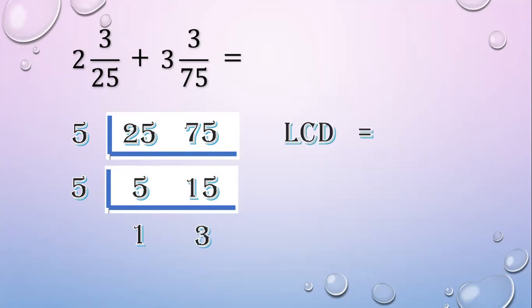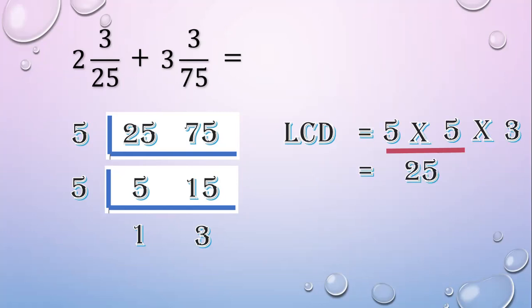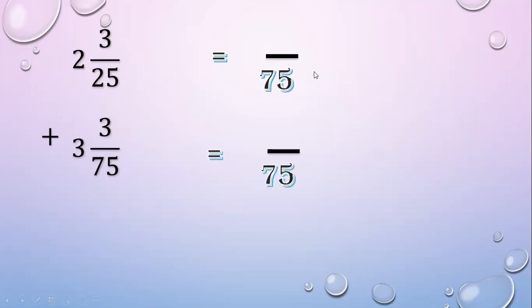So the LCD equals 5 times 5 times 3. 5 times 5 equals 25; 25 times 3 equals 75. So the LCD is 75. Next, change the denominator to 75. Think of a number we can multiply to 25 to make it 75 — that is 3. And for 75 to make it 75, also 3.